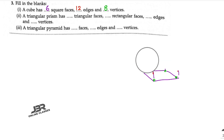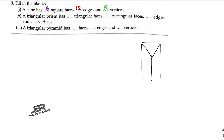Number two: a triangular prism. Draw a triangular prism. How many triangular faces are there? There are two triangular faces. How many rectangular faces? Three rectangular faces — first one, second one, and the back one. Now edges: one, two, three, four, five, six, seven, eight, nine — total nine edges.